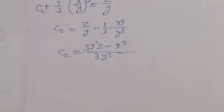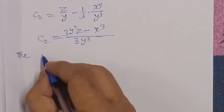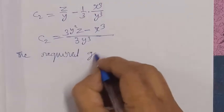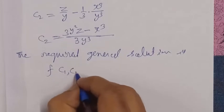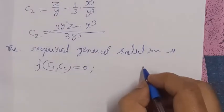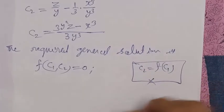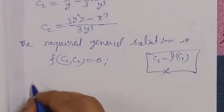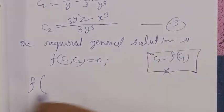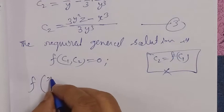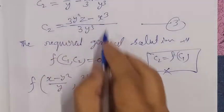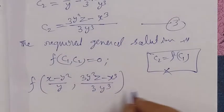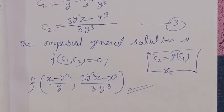The general solution of the given differential equation is therefore expressed as a function of C₁ and C₂ equal to zero. Substituting the values of C₁ from equation two and C₂ from equation three, we write the general solution. The required general solution is: three y squared z minus x cubed upon three y squared equals a function, giving the complete solution. Alhamdulillahi rabbil alameen.